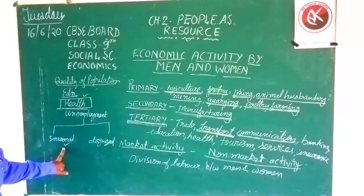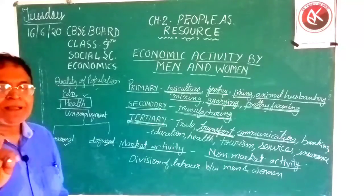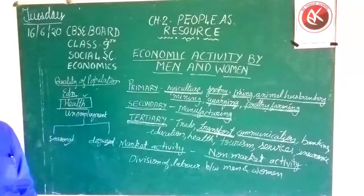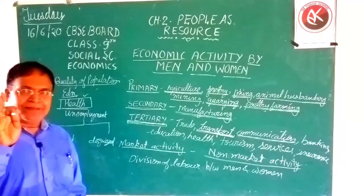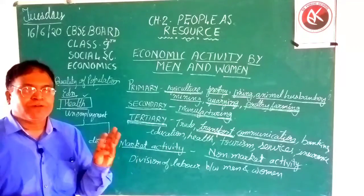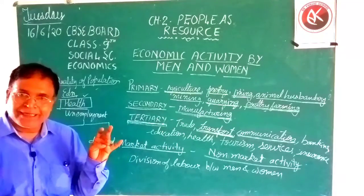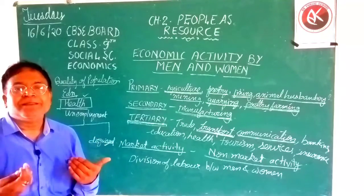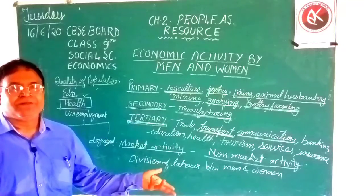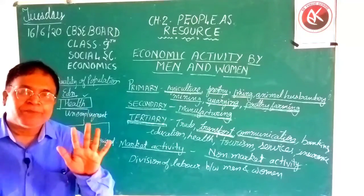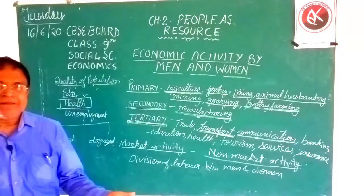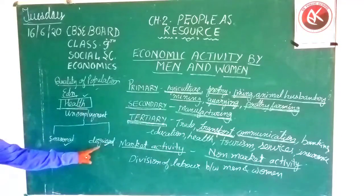Seasonal unemployment is experienced in rural areas as well as urban areas. In rural areas, at the time of sowing and harvesting, people are engaged as labourers. When this activity is over, they become unemployed. Means only four months they are employed, and the remaining eight months they are unemployed. This is the kind of unemployment called seasonal unemployment.